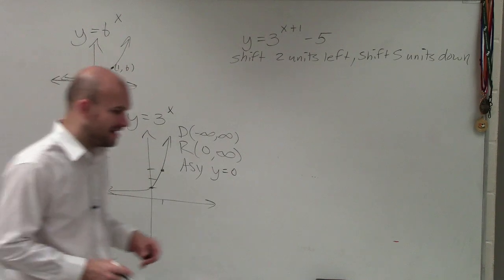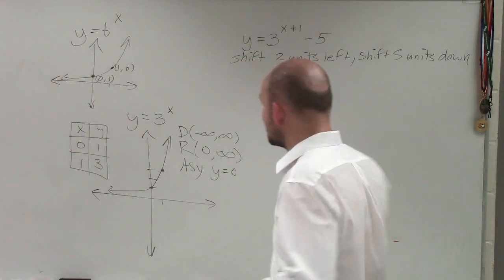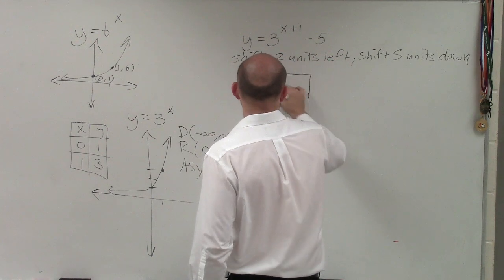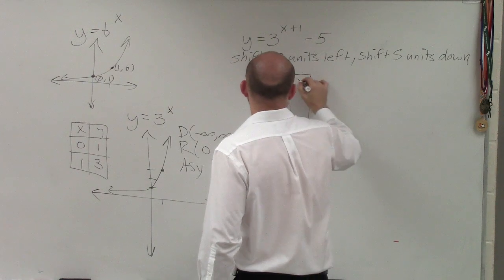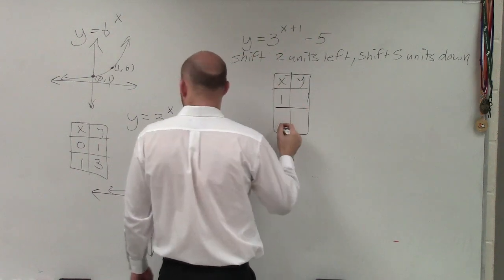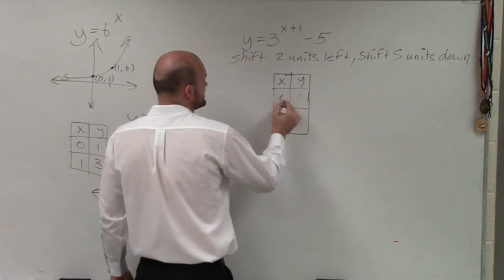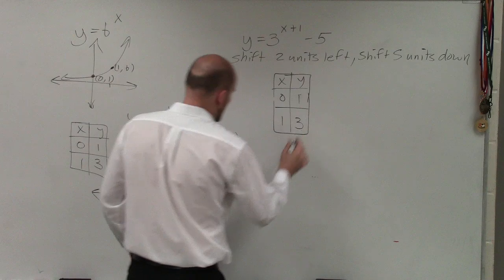So we have a table of values of 0, 1 and 1, 3. And a lot of times, what I like to do when looking at this is you can look at this graphically if you like, but I like looking at the table of values and seeing how they change based on the transformations.